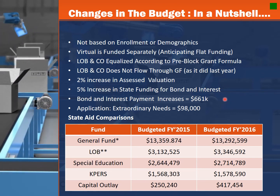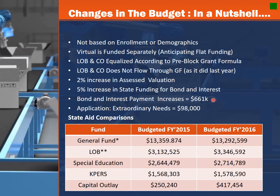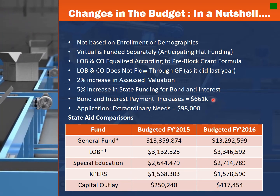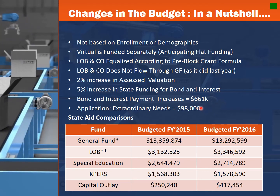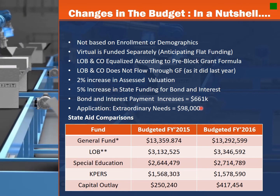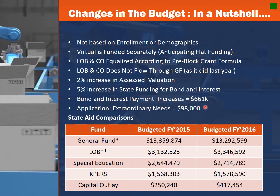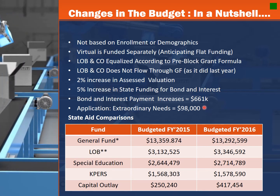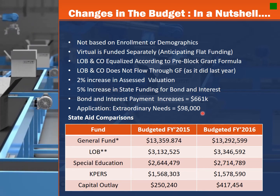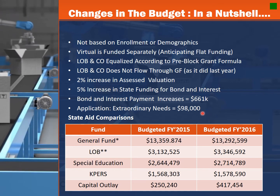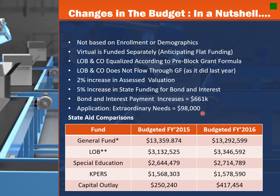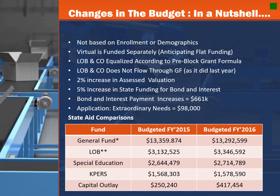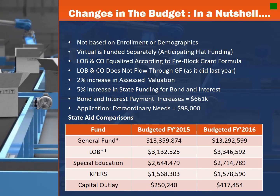We did see a 2% increase in assessed valuation. We did receive a 5% increase in state funding for bond and interest based on the formula. Our bond interest payment does increase by $661,000, but that did not result in an increase of local taxpayer dollars. Our district did apply for two additional positions added from Extraordinary Needs, so we may be entitled to up to $98,000 of additional funding based on our growth. However, keep in mind if we had been under the old formula, based on our growth over the last couple of years, we'd be seeing $450,000 to $650,000 additional.